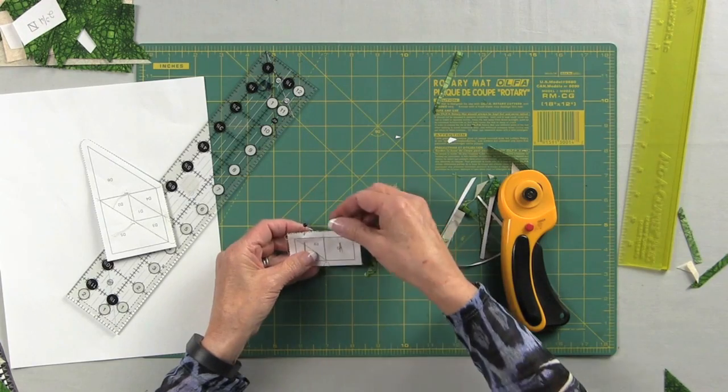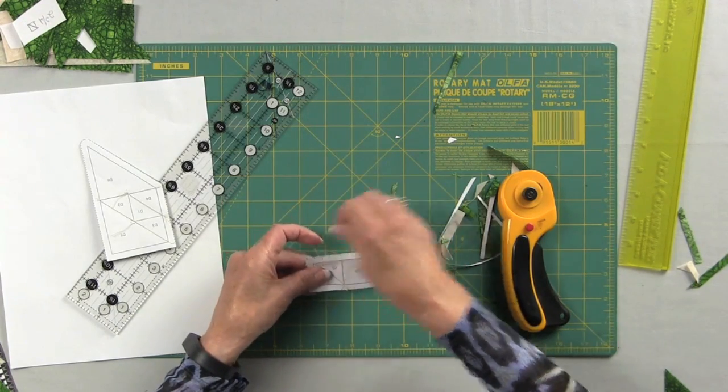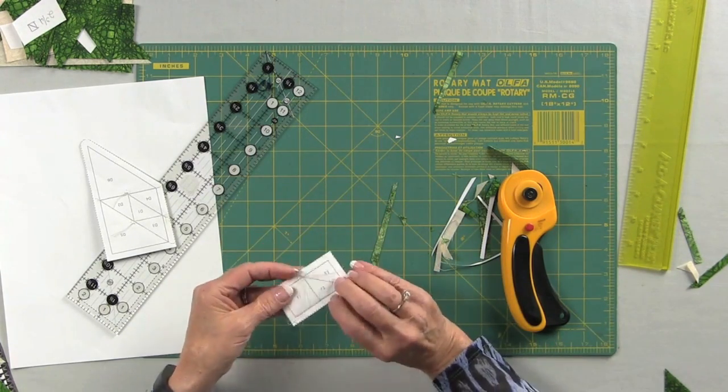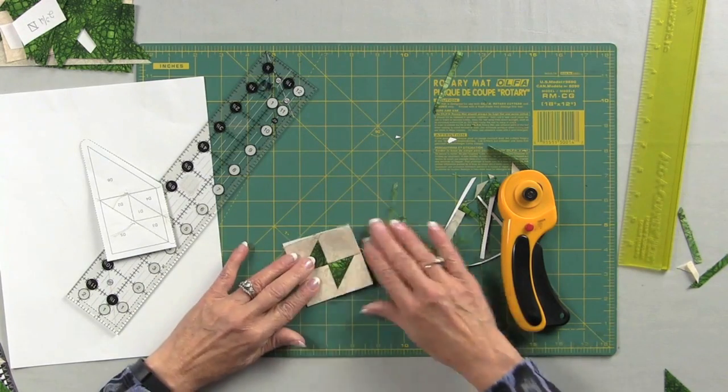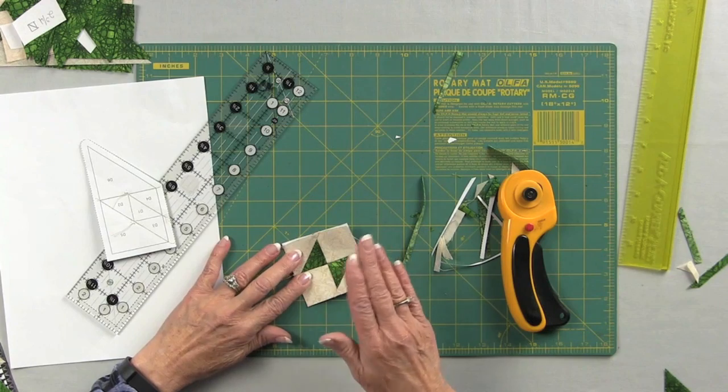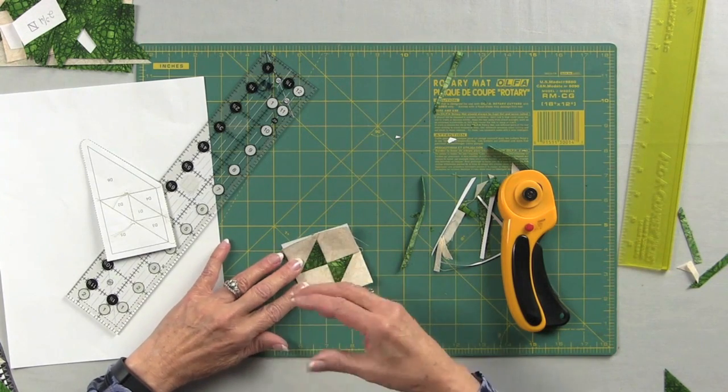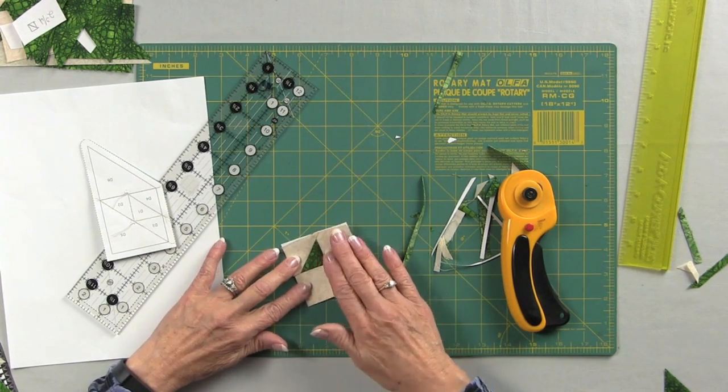And just make sure everything is lined up. And then when I press, I always just press one direction. So I'll take the nose of the iron. And I actually will use steam at this point because the steam relaxes the paper, makes it easier to handle. And so I just take the iron and just push it like here, get it pressed really well.